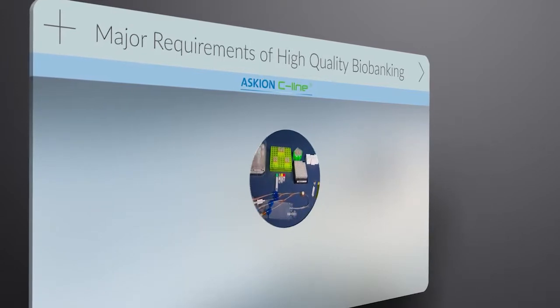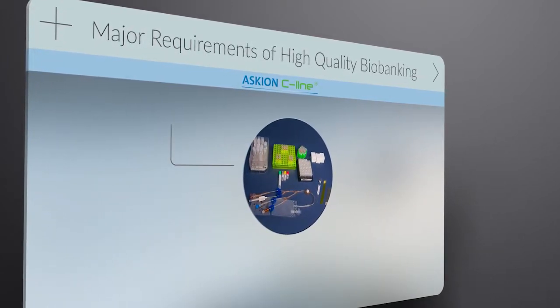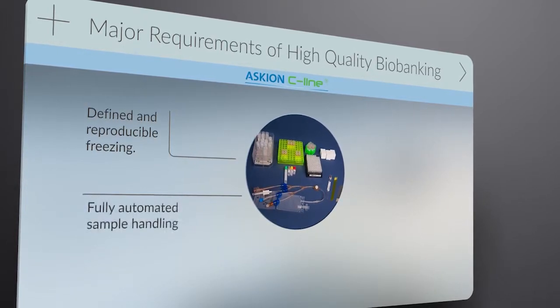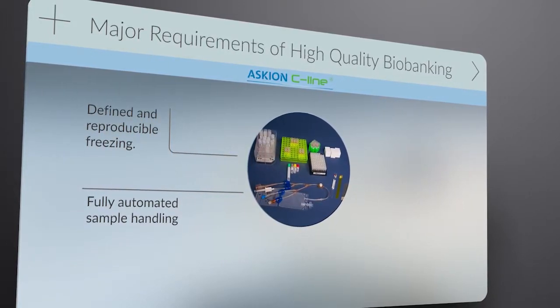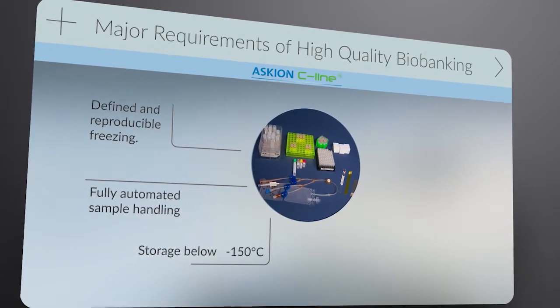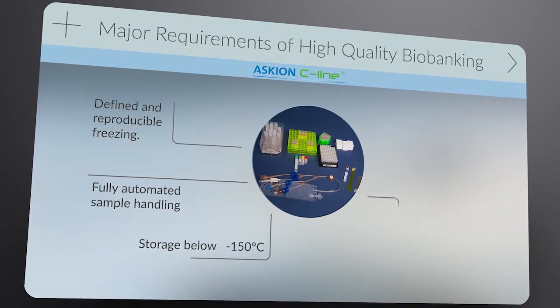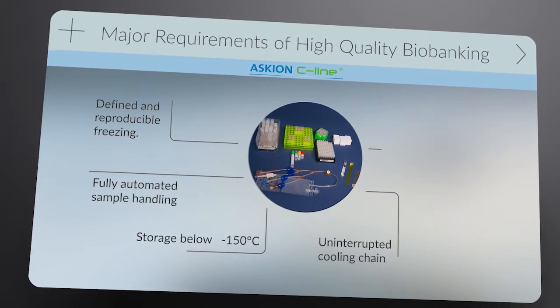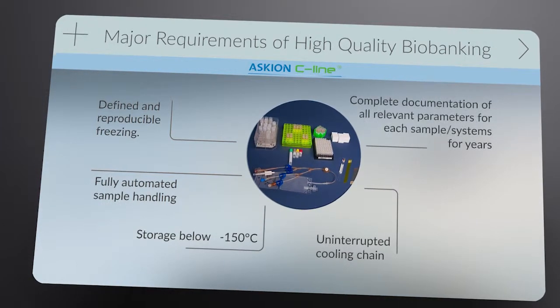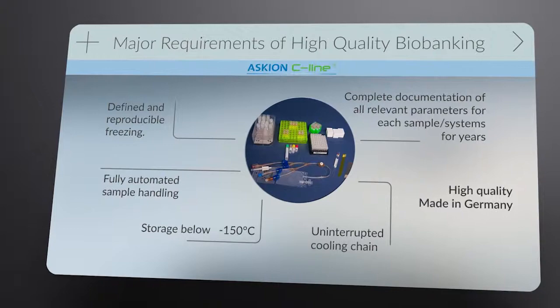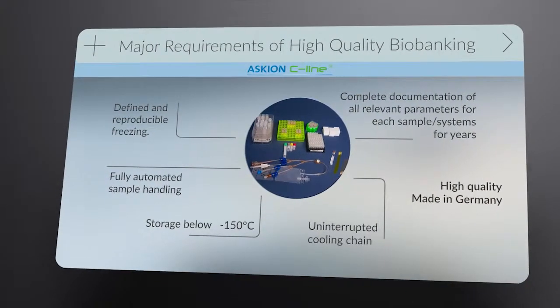Samples can be frozen in a controlled and reproducible manner. The system is flexible and fully automatable and can accommodate storage temperatures for samples at below minus 150 degrees Celsius. An uninterrupted cooling chain can be maintained at not less than minus 100 degrees, and complete and long-term documentation of the system and sample data are the key features of our biobanking solution.